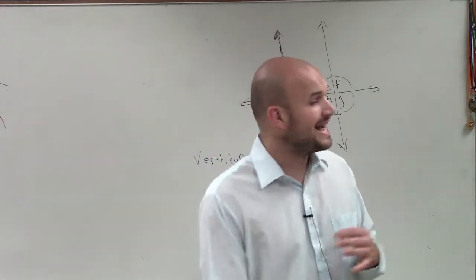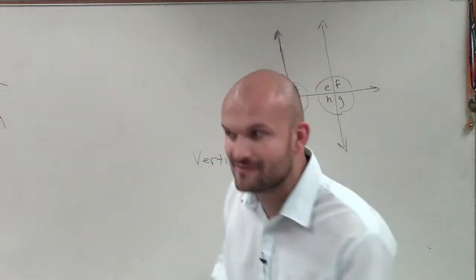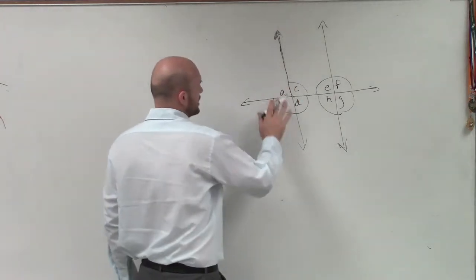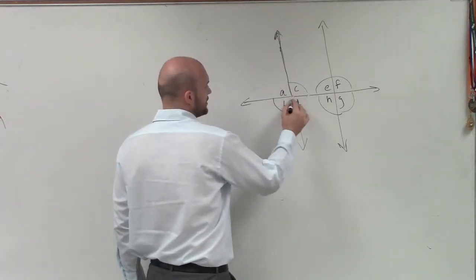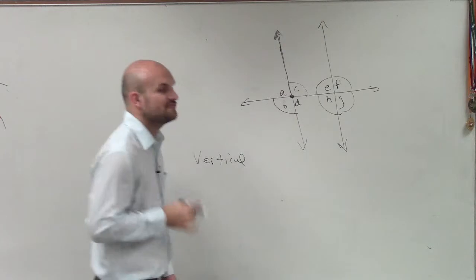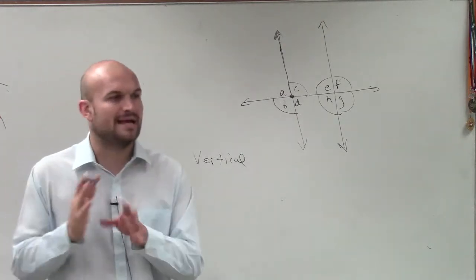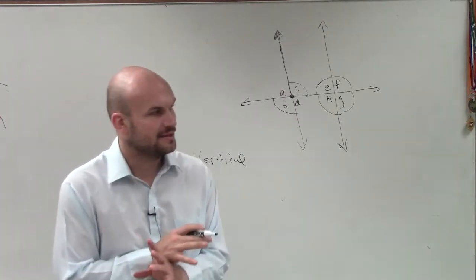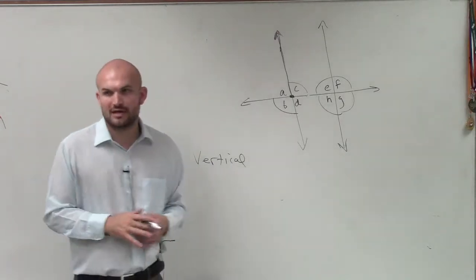Now remember, vertical angles are not adjacent, but they do share the same vertex. So there are two angles that are directly opposite of each other that share the same vertex. Vertical angles are created when we have intersecting lines.